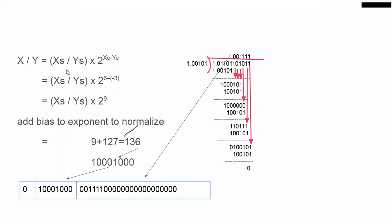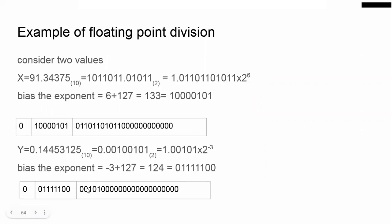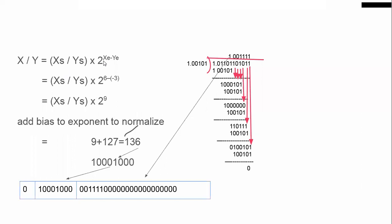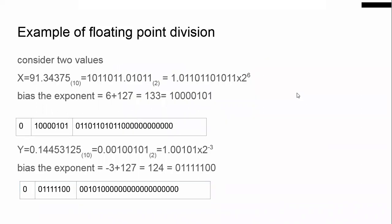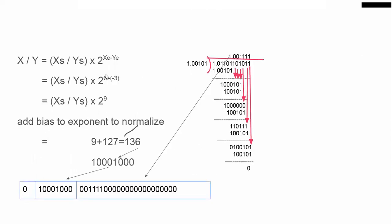Now we will do the division operation X by Y. The result is XS/YS × 2^(XE − YE), that is exponent of X minus exponent of Y. After normalization, the X exponent is 6 and the Y exponent is −3. So 6 − (−3) = 6 + 3 = 9, so it is × 2^9. The result will have an exponent value of 9.